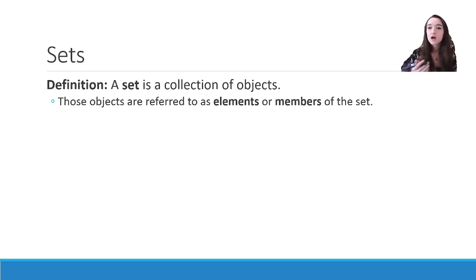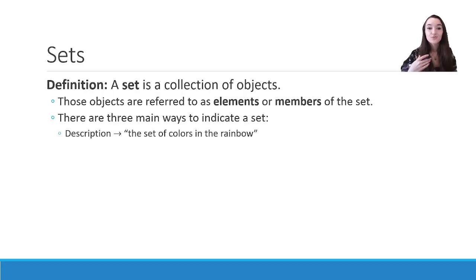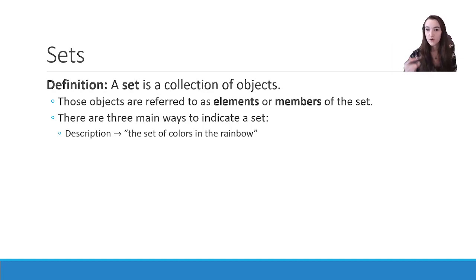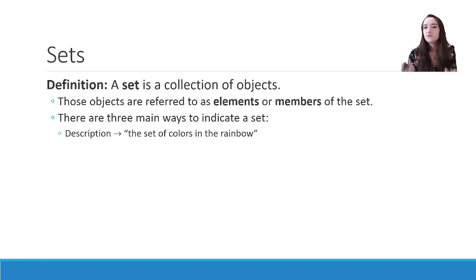Those objects are going to be referred to as the elements or members of the set. There are three main ways to indicate a set. The first way is via description, such as 'the set of colors in the rainbow.' I've just described what is in the set, and then if you know the seven colors in the rainbow, you know what is in that set.